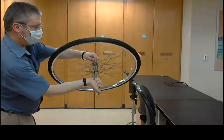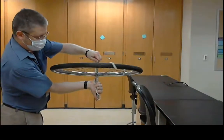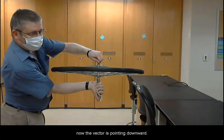If I twist this around the other way, follow the right thumb, now the vector is pointing downwards.